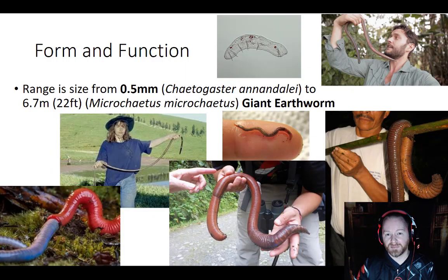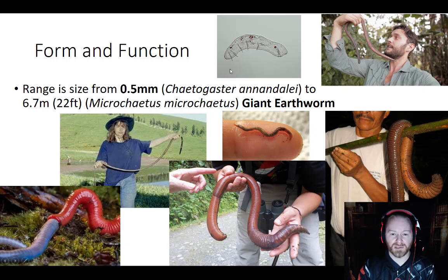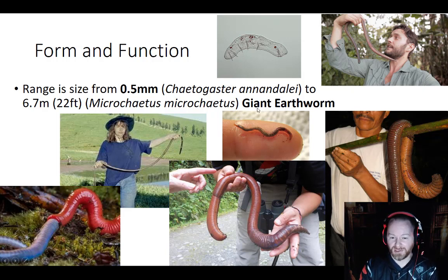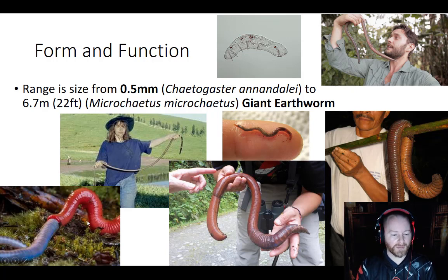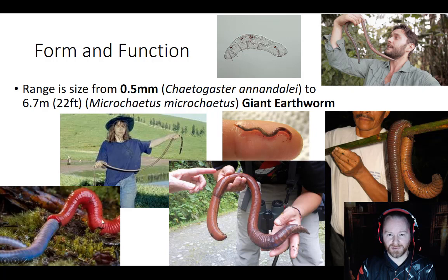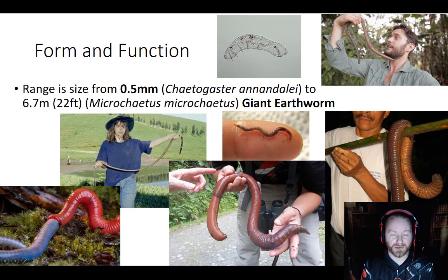Annelids come in a variety of sizes — the smallest is about 0.5 millimeters, all the way up to the giant earthworm which can reach up to 22 feet long. There's also an image here showing an earthworm being eaten by a caecilian — not a person from Sicily, but actually a legless amphibian that specializes in eating earthworms. Pretty cool! We'll cover those in Zoology 2.